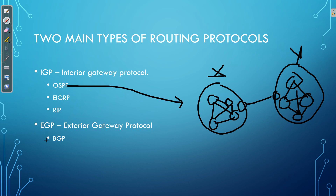Why do we have both IGPs and EGPs? These protocols are designed to exchange routes in different situations. IGPs focus on speed — within our enterprise, all we care about is reaching networks the fastest way possible. However, when exchanging routes between different companies, you don't really care about speed; you care about stability — a route that doesn't change very often, so you can reliably exchange information between the two companies. That's what BGP provides. In the CCNA exam, we don't delve too much into BGP; the only IGP we look at is OSPF. But it's important to understand the distinction between IGPs and EGPs.